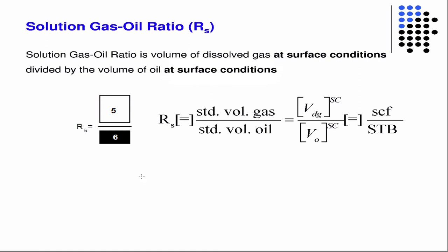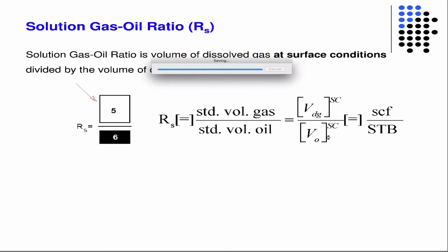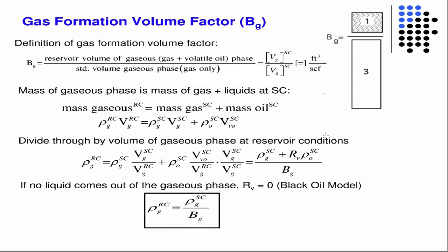The equation at the bottom introduces those definitions, and then it's rewritten at the top, and we take the limits to get the continuity equation for gas. This one looks different because we have gas in the gaseous phase and dissolved gas in the oil phase. The solution gas ratio is the volume of dissolved gas under standard conditions divided by the volume of oil under standard conditions. The formation volume factor for gas: the volume of gas after expansion when pressure drops below the bubble point includes gas and volatilized oil, but we consider negligible volatilized oil. And if no liquid comes out of the gaseous phase, R_V equals zero — that's the black oil model assumption.